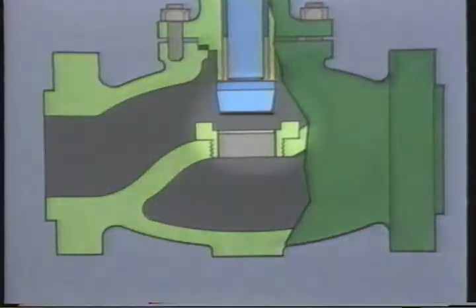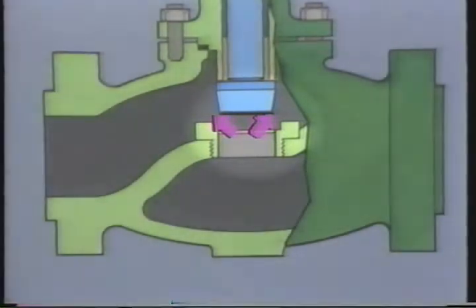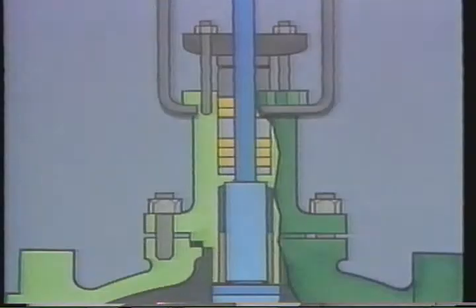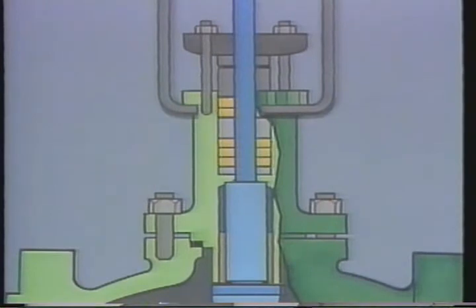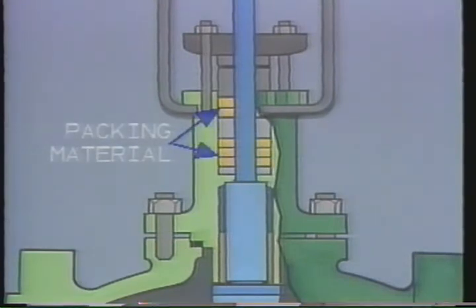In a globe valve, the area of the valve opening between the seat and plug determines how much processed fluid can flow through. Now let's look at the parts that guide the movement of the stem when the valve is in operation. The packing assembly is contained in a stuffing box. One part of the packing assembly is the packing material. Packing material helps guide the stem and keeps fluid from leaking out along the stem. Sometimes packing materials are lubricated to reduce friction.